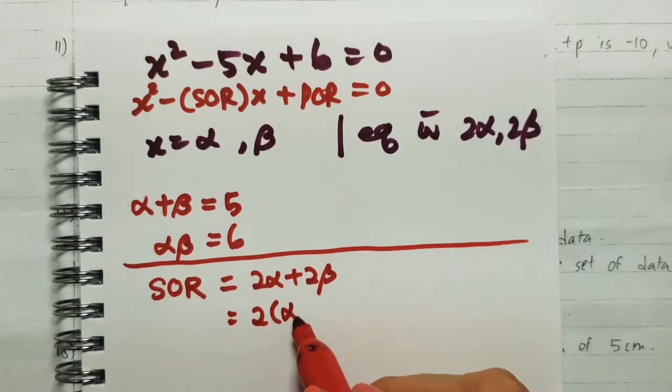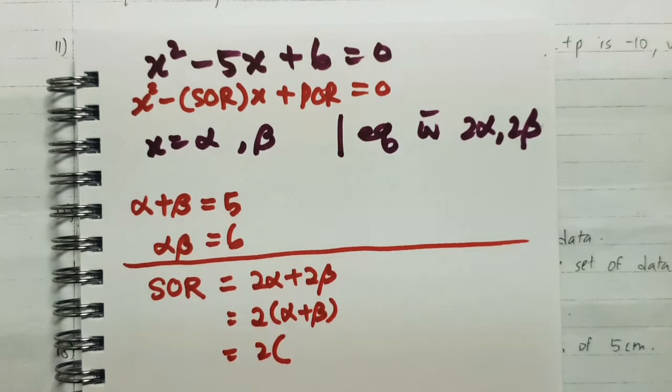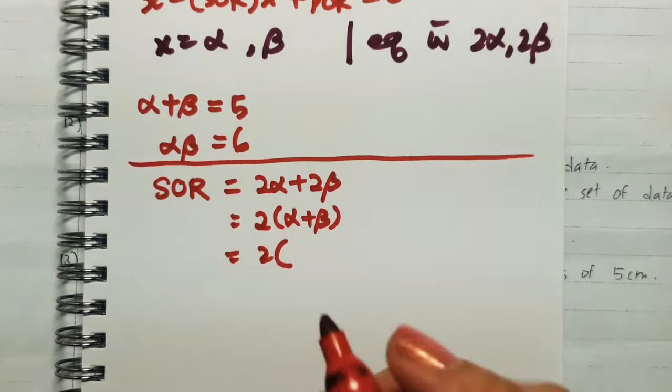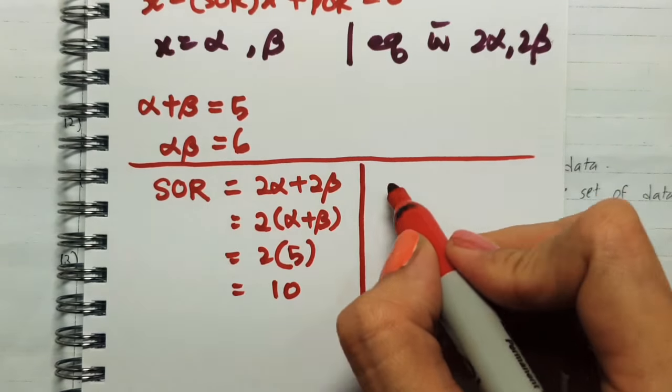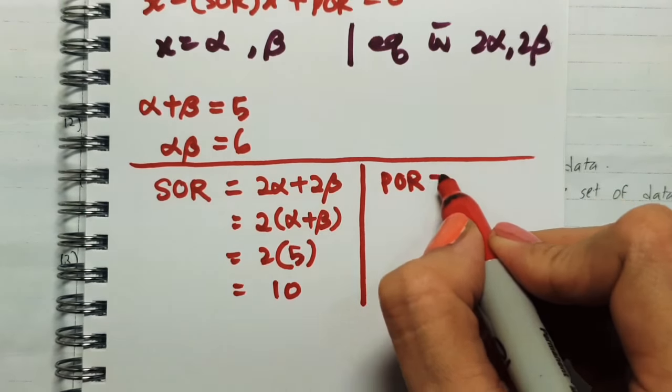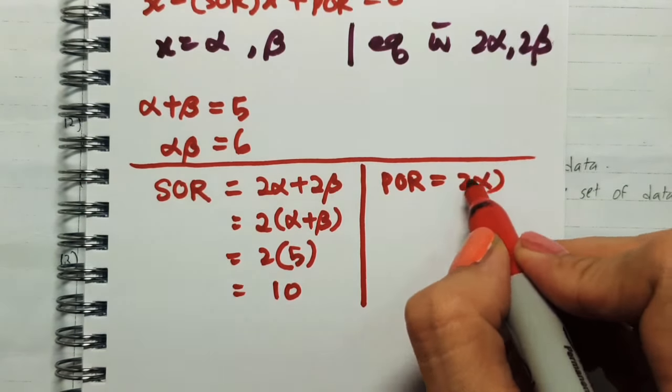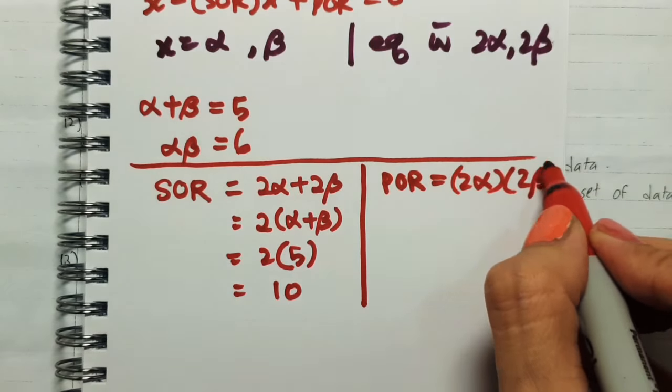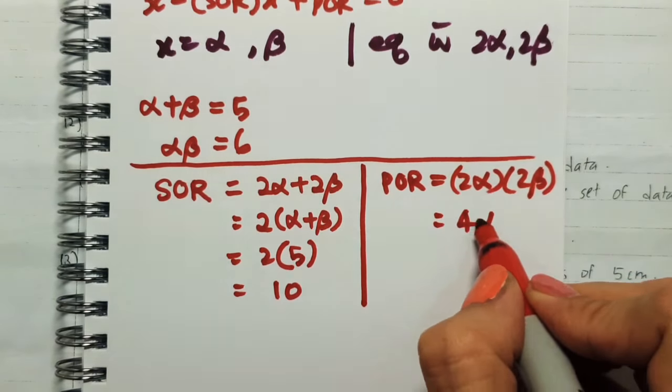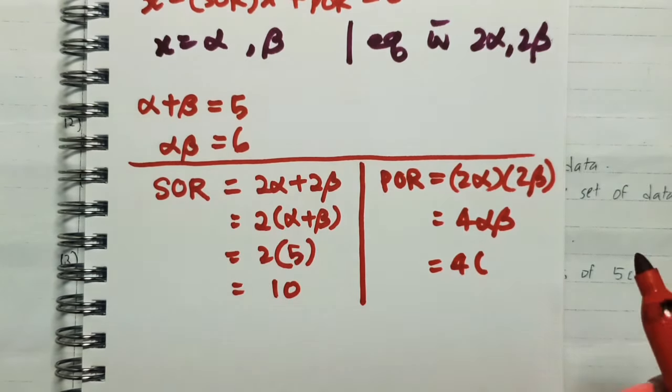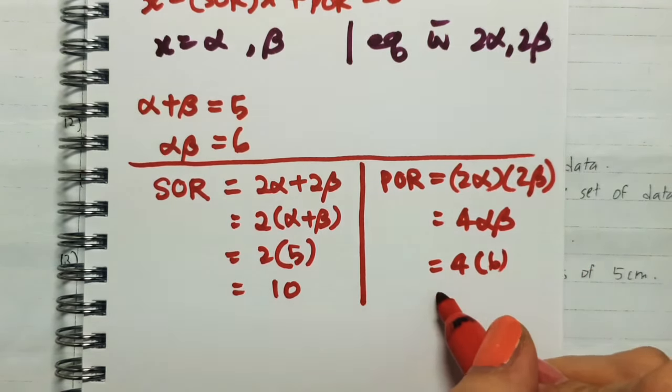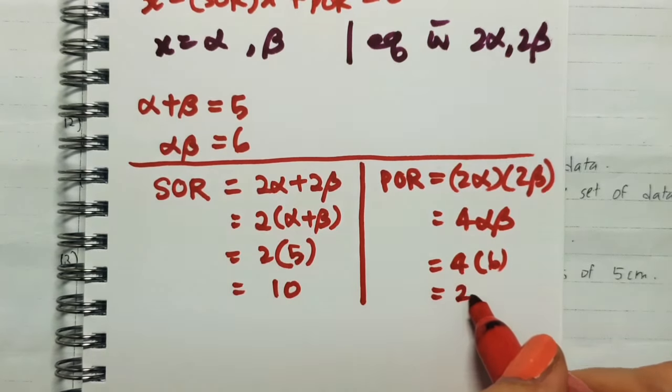Alpha plus beta has been found. On the other hand, product of roots equals 2α × 2β = 4αβ, where αβ has been found to be 6. So our product of roots is 24.